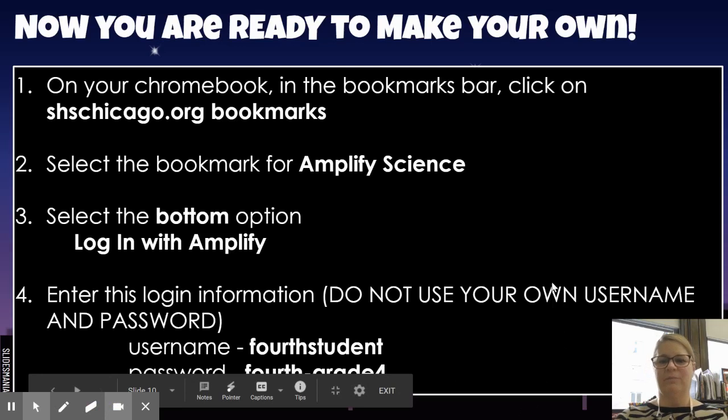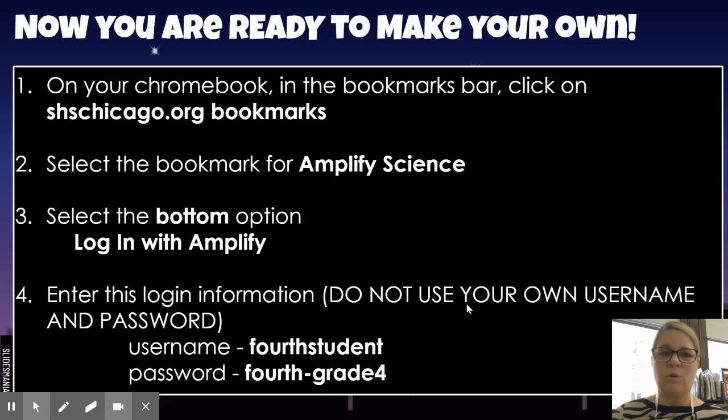Here is your information. So again, you're going to go to your Chromebooks bar and you're going to click on the Sacred Heart from sacredheartchicago.org bookmarks where you see your website and epic books and all those you've used several times. But this time you're specifically looking for Amplify Science. So you're going to make sure you click on Amplify Science. Once you're there, you're going to have several options that say something like Clever and Google, but we are going to use log in with Amplify. It is the third option, the one on the bottom. If you choose anything else, it will not work.